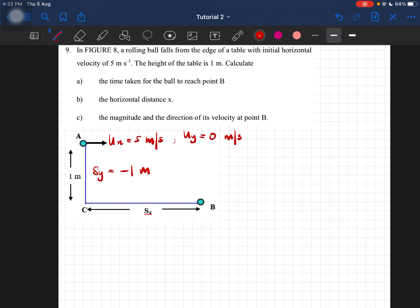We know that the final velocity for the horizontal component will also equal the initial velocity, which is 5 meters per second. Okay, that's the information we have obtained from the question.